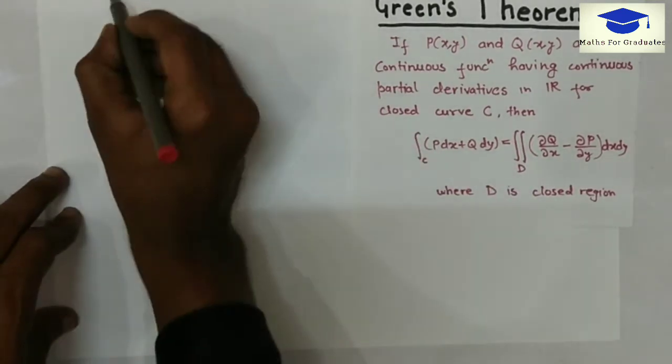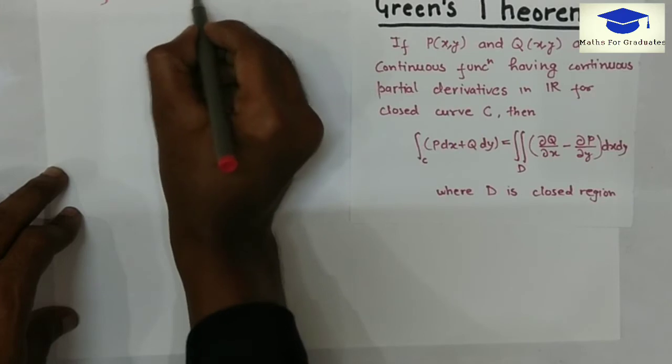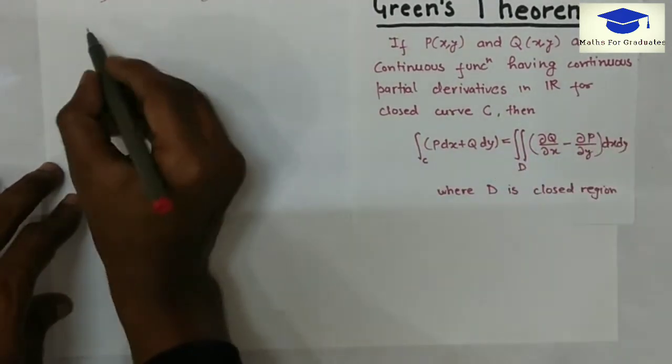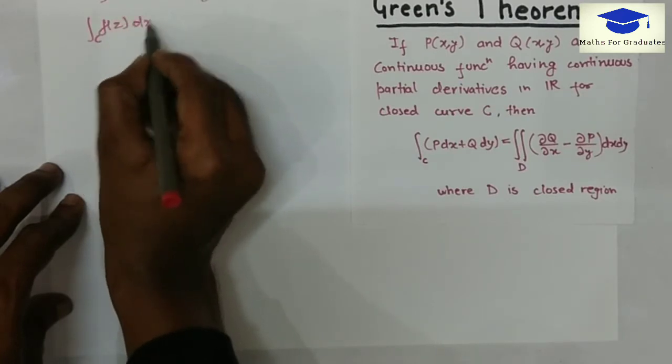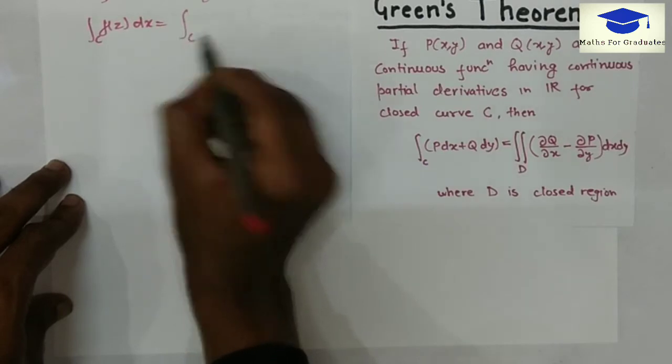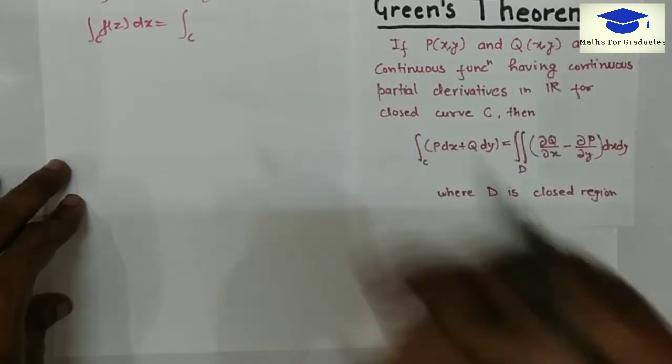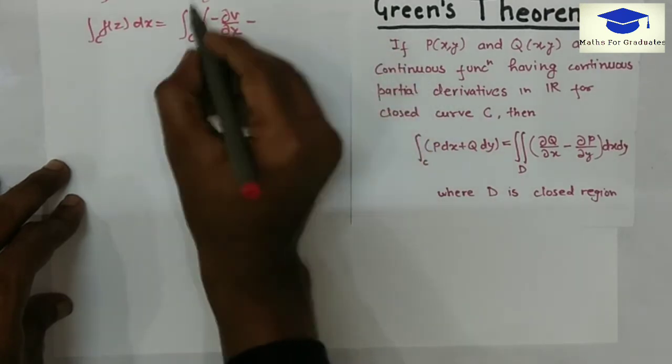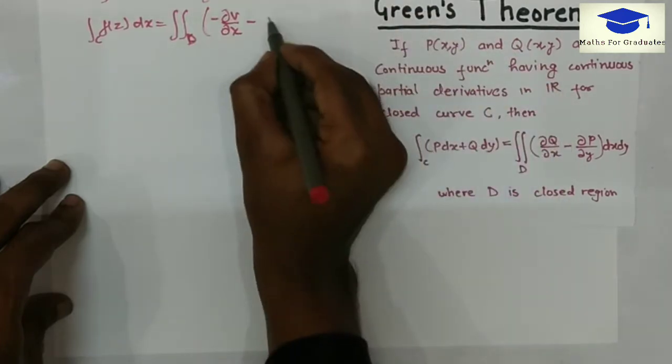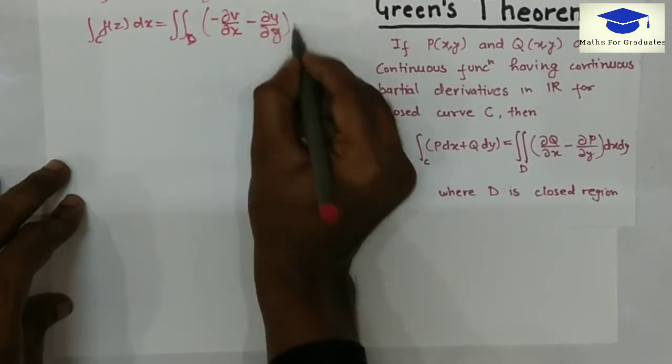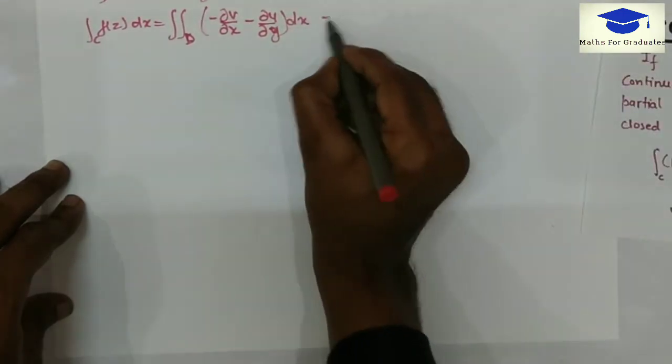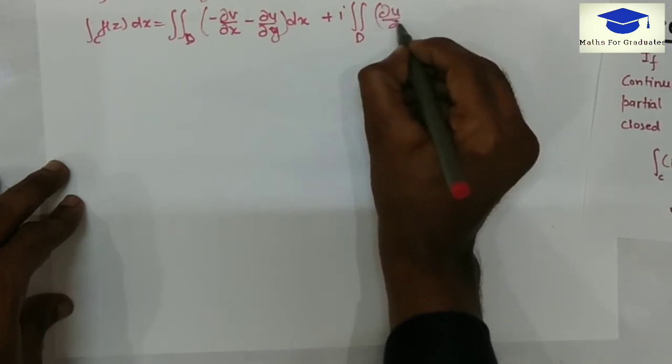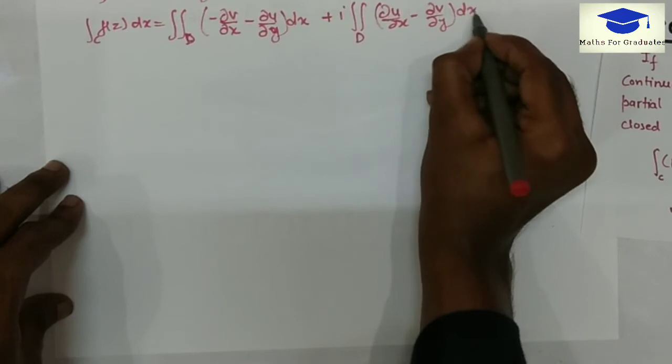Since the given f of z is analytic, it satisfies the conditions of Green's theorem. Now, integration of f of z will be, applying Green's theorem here where q is minus v, therefore it will be double integration of minus del v over del x minus del u over del y dx dy. Plus i times double integration in the domain d of del u over del x minus del v over del y dx dy.